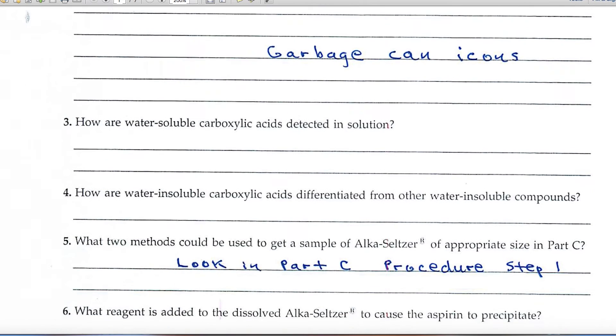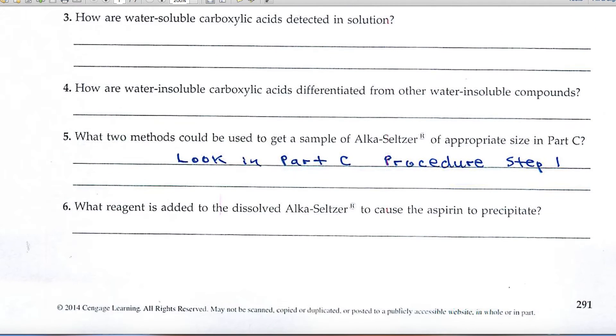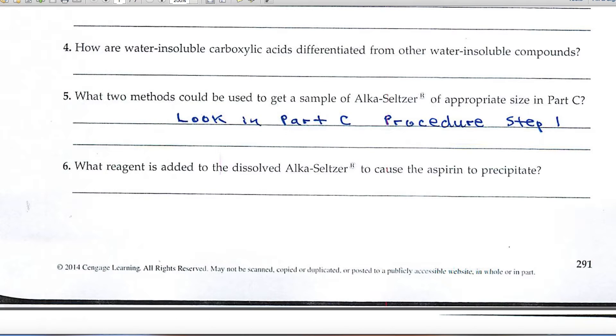Most of these questions are pretty straightforward. The answers you'll find by reading the content of the experiment or going into the procedure. For example, in number five, it talks about the Alka-Seltzer tablet. You can find the answer to number five by looking in part C in the procedure, step one.